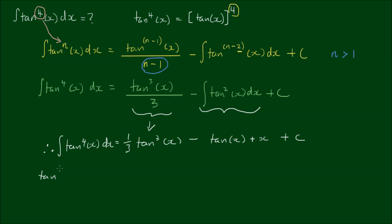So what if we had tan to the fourth power of Ax, where A is just a constant. So we have a coefficient in front of the x here. Well, to solve this, we can just use a simple substitution.